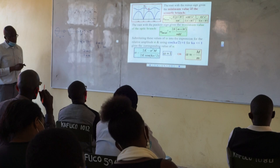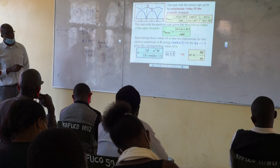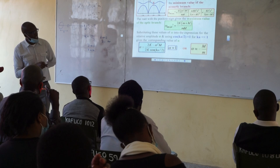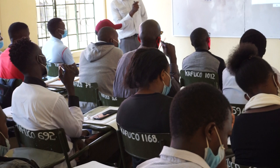So if we substitute these values of omega into the expression for the relative amplitude A, and using cos(ka/2) equals 1 — that is when the angle is very, very small — because remember, what is cos(0)? Cos(0) is 1.